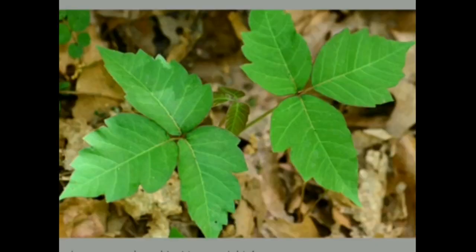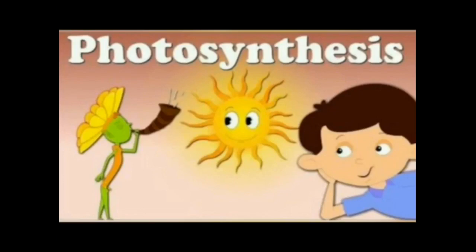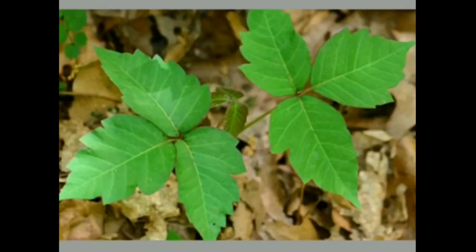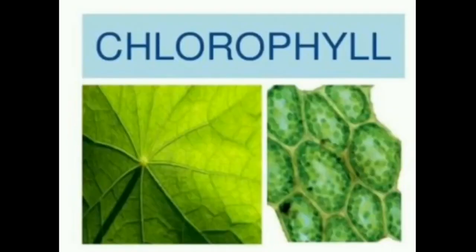In this chapter we are going to discuss about the structure of leaf and the process of photosynthesis. Now let's start with the topic: structure of leaf. What is the color of the leaf? Yes, it is green in color. Most of the leaves are green in color.